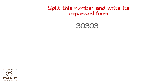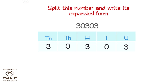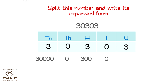Split this number. We can split it like this. Now let's expand the number in each position according to its place value: 30,000, 0, 300, 0, 3. When we add them up, we get the expanded form of the number.